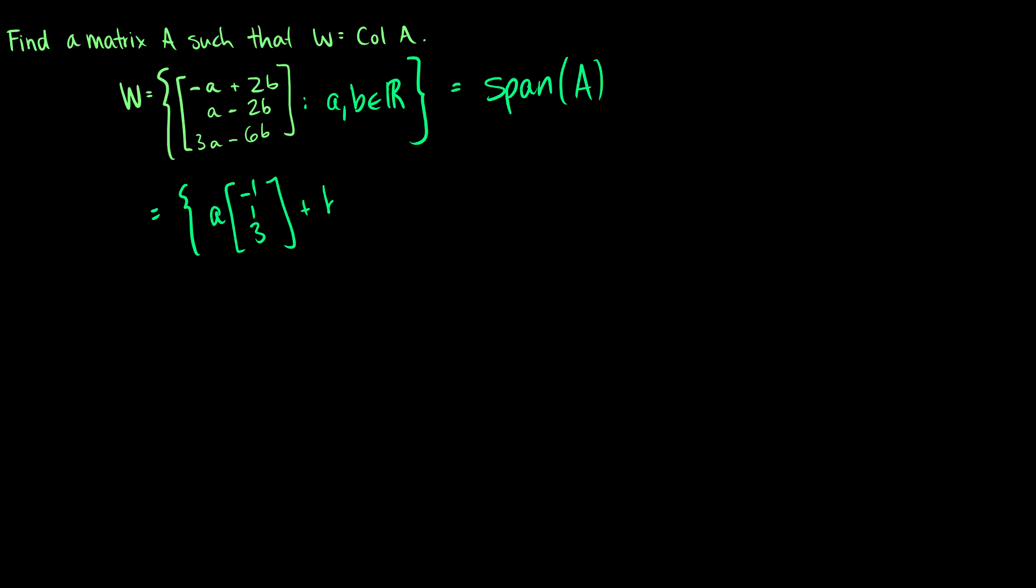And we're going to add B times a vector, which is going to be 2, negative 2, 6. And this will be for all A and B in the real numbers.